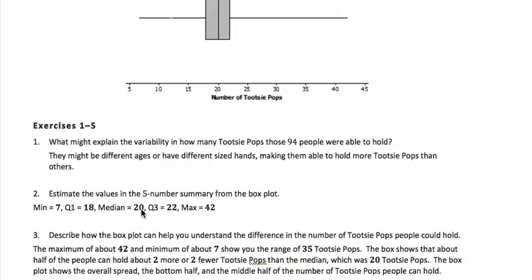Looking at our median, which is the center here, and then our Q1, our first quartile, which is right here at 18, and our third quartile, which is right here at 22. And this box, remember, represents 50% or half of all of the data. So half of all the people are able to grab the median, give or take two Tootsie Pops.